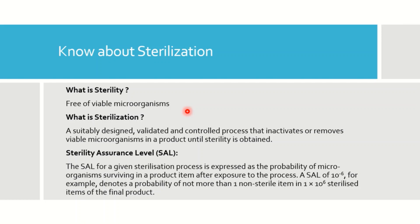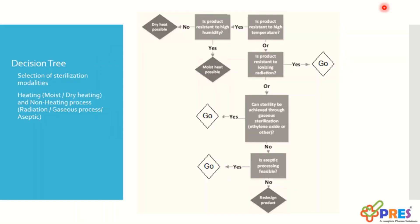Sterility Assurance Level (SAL): The SAL for a given sterilization process is expressed as the probability of a microorganism surviving in a product item after exposure to the process. A SAL of 10 to the power minus 6, for example, denotes a probability of not more than one non-sterile item in 1 × 10⁶ sterilized items of the final product — that is, 1 in 1 million.